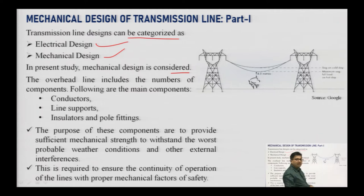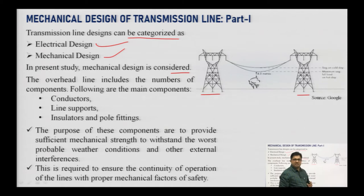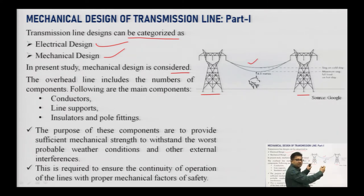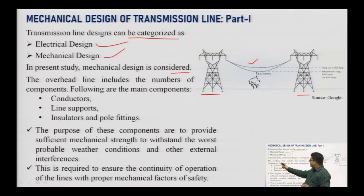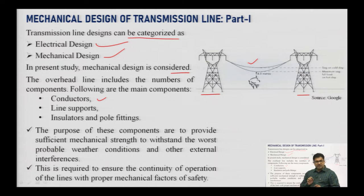This figure represents a transmission line structure, where these structures are known as the transmission line supporting system — or the transmission tower — and in between these towers you have the transmission conductor placed. It is always placed at a certain height from the earth. The overhead line includes a number of major components: conductor, line supports, insulators, and pole fittings.